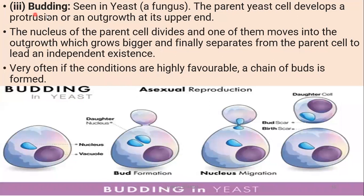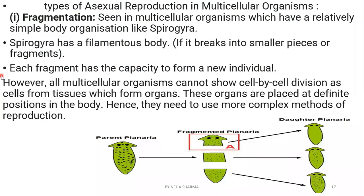Budding is seen in yeast cells, which is a fungus. The parent yeast cell forms an outgrowth - a bud - at its surface. After that, the nucleus of the parent cell divides, and one part of the nucleus moves into the bud. When the nucleus moves into the bud, the bud gains independence.